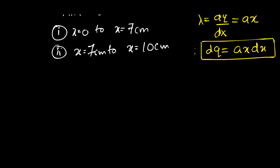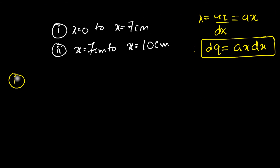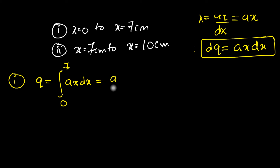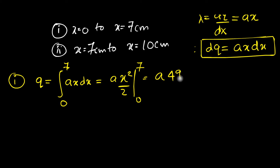To find the total charge from 0 to 7 cm, we integrate: Q = ∫₀⁷ a·x dx. Pulling out the constant a, we get a · [x²/2] from 0 to 7, which equals a × 49/2. The units are microcoulombs. We don't know the value of a yet, but we'll find it shortly.